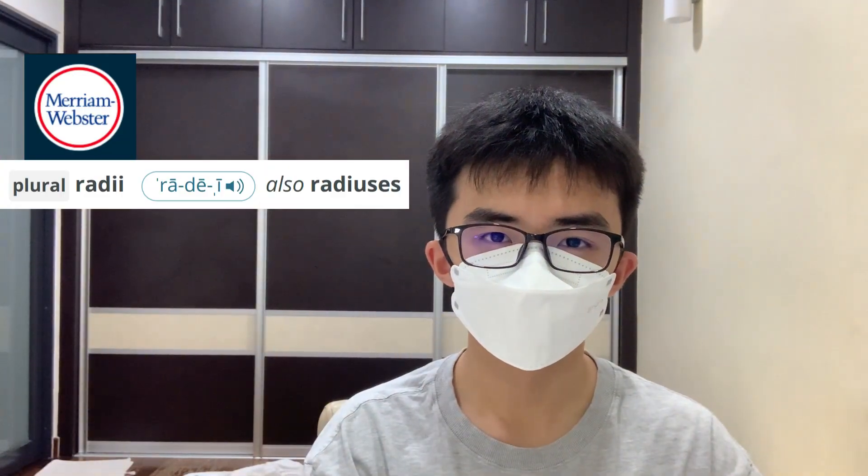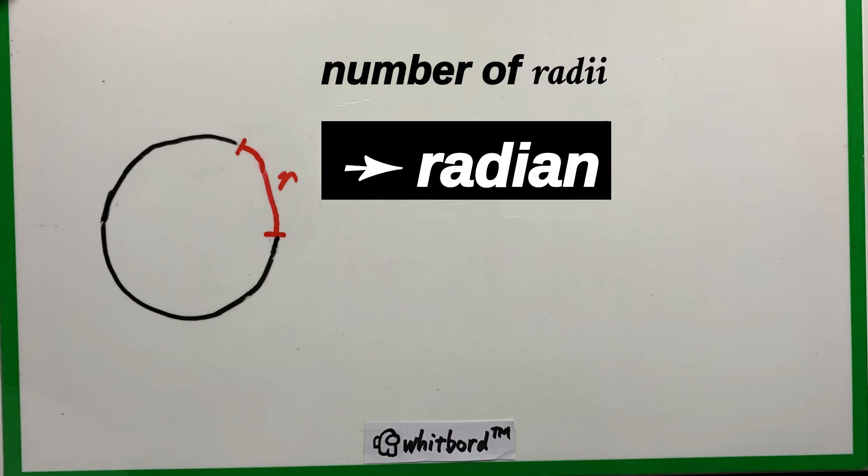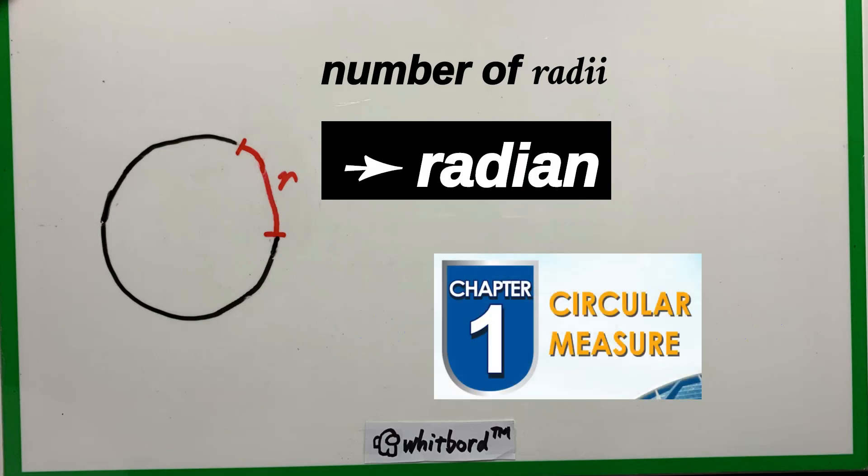It's radii. Anyways, since the angle just shows the number of radii, we call it the radian. And since it's also related to the circle, it was also known as the circular measure. Hence the title of this chapter.